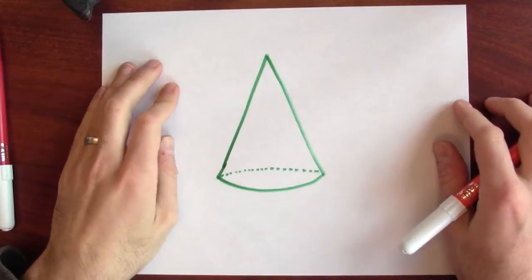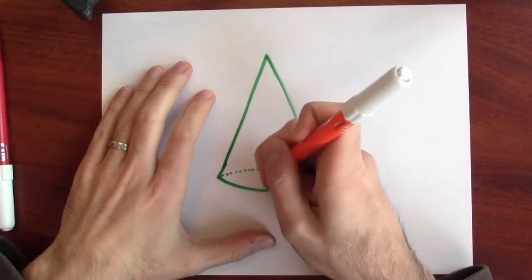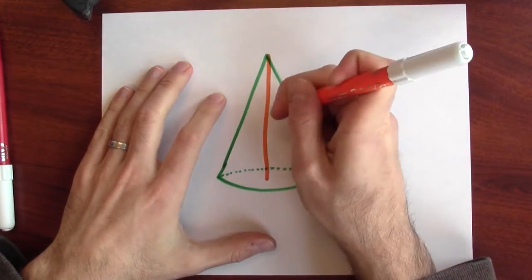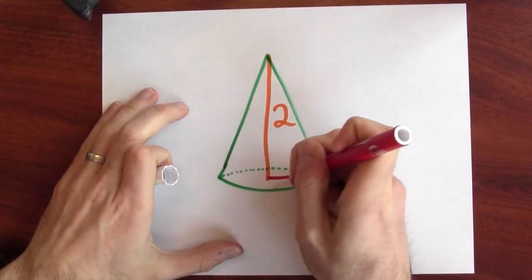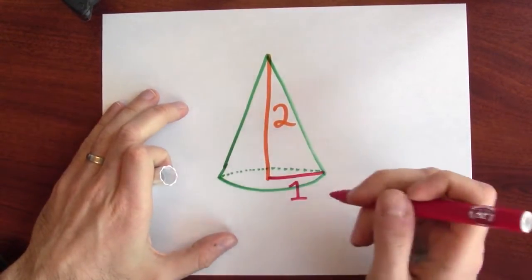Let's work through an example. Here's a cone. I want to compute the volume of this cone. Just for concreteness, let's suppose that the cone has a height of two units and a radius of one unit. I want to set this thing up as an integration problem. I want to cut this thing up into slices and add up the volumes of the little slices.